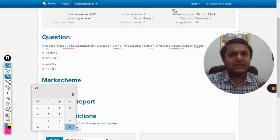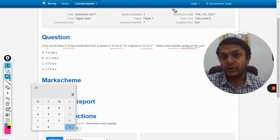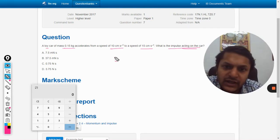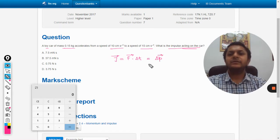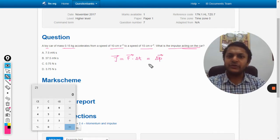So as per the impulse is concerned, we have only two formulas here. The impulse is a vector, first of all. Impulse is the product of force and time, and it is equal to the change in momentum. This is what we know from the theory of impulse.